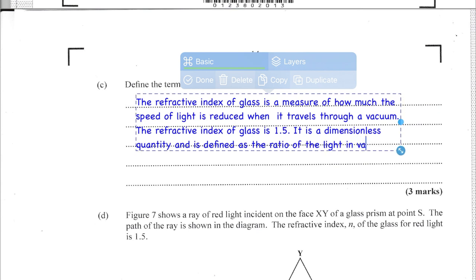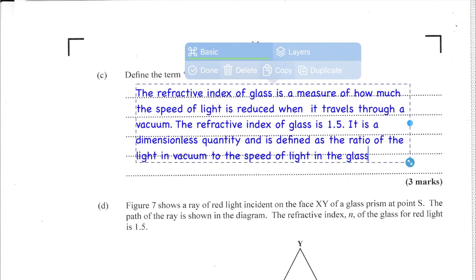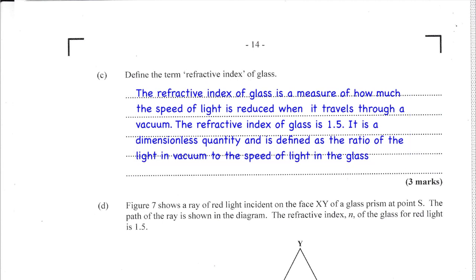Question C: define the term refractive index of glass. The refractive index of glass is a measure of how much the speed of light is reduced when it travels through glass compared to a vacuum. It is a dimensionless quantity defined as the ratio of the speed of light in a vacuum to the speed of light in the glass, and it depends on the properties of the glass such as composition and density.